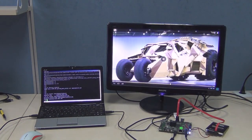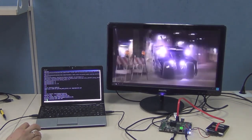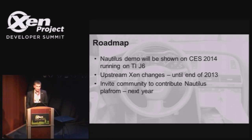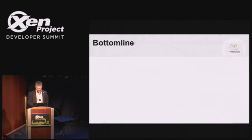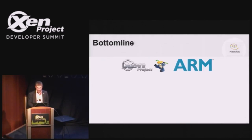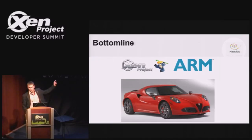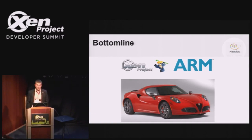Our roadmap is to show a full demo with every feature implemented on J6 at CES this January — we will be at the TI booth. We are going to upstream all the Xen changes after migrating to 4.4, to avoid any conflicts, before end of 2013. We call this stuff Nautilus and we want to invite everyone to contribute to it as a platform next year. The bottom line is simple: Xen and ARM on automotive is absolutely useful and gives Xen a good way into car applications.